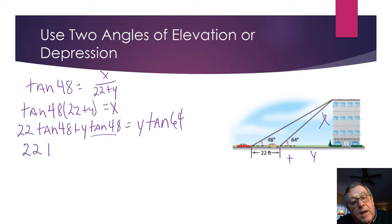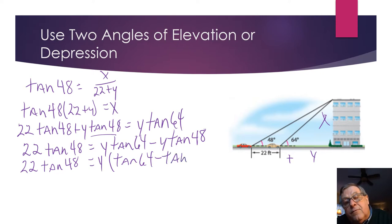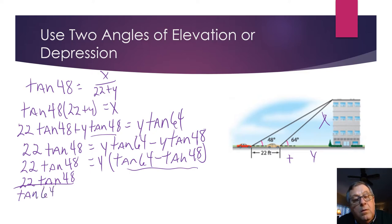So now I've got 22 times the tangent of 48 equals Y times the tangent of 64 minus Y times the tangent of 48. And we can factor out a Y. We've got 22 times the tangent of 48 equals Y times the tangent of 64 minus the tangent of 48, factoring out a Y for both terms. And now I can divide by this expression here and solve for Y. So then we would have 22 times the tangent of 48 over the tangent of 64 minus the tangent of 48, and that's going to equal Y.